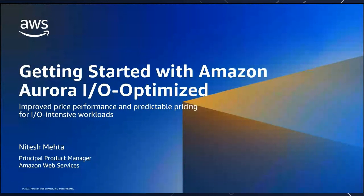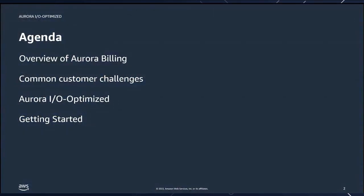Today we'll be covering how you can improve the price performance of your IO intensive workloads and benefit from predictable pricing. Today's agenda will go into an overview of Aurora's billing model and the different components of your Aurora bill. Next we will go into common challenges customers run into with Aurora's billing model, specifically around IO charges — input and output operations. Then we'll cover why we launched Aurora IO Optimized and how to get started using the RDS console or CLI.